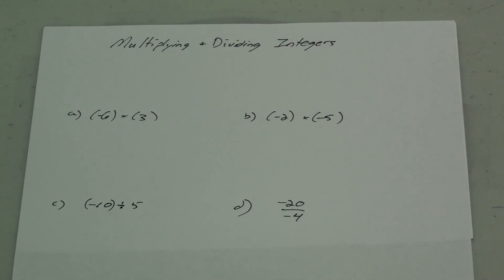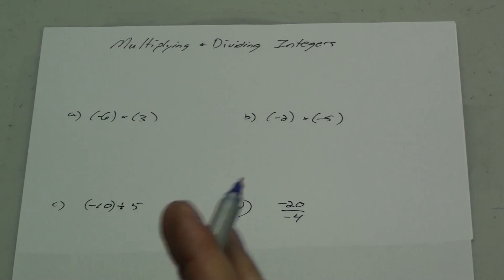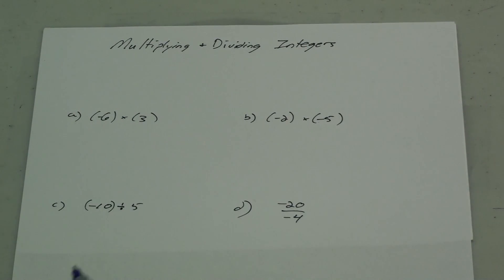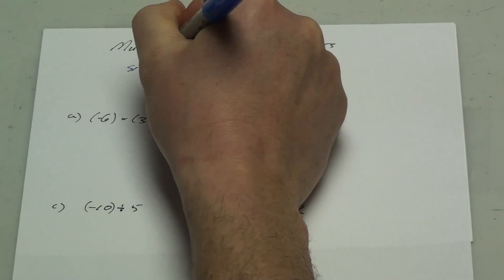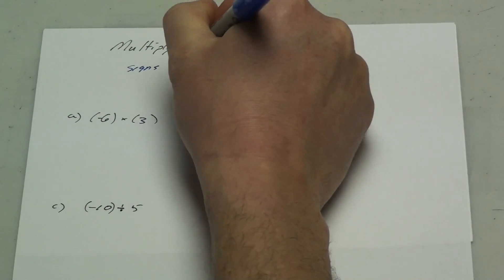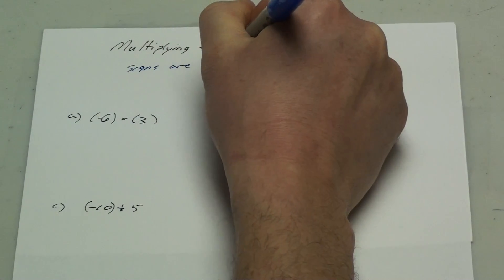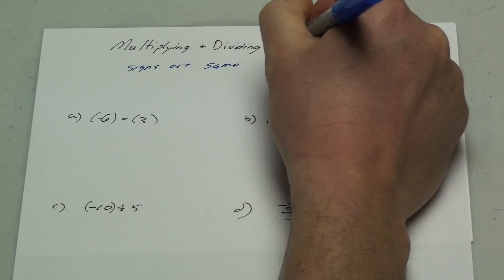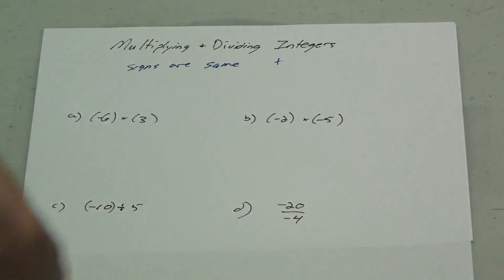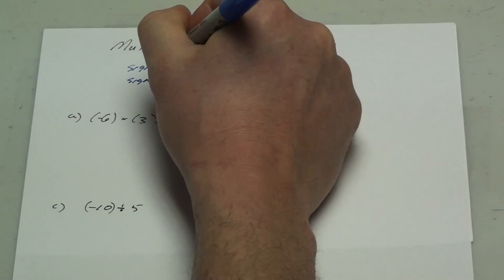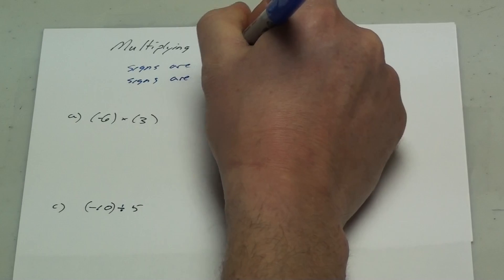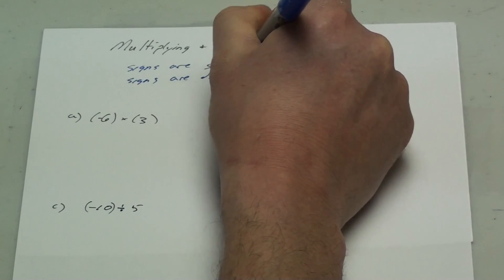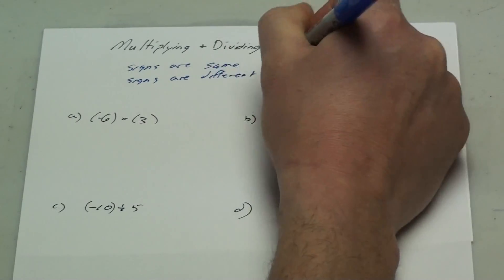A short lesson on how to multiply and divide integers. Simple rules when dealing with the signs: if the signs are the same, it's gonna be a positive. If the signs are different, it's gonna be a negative.